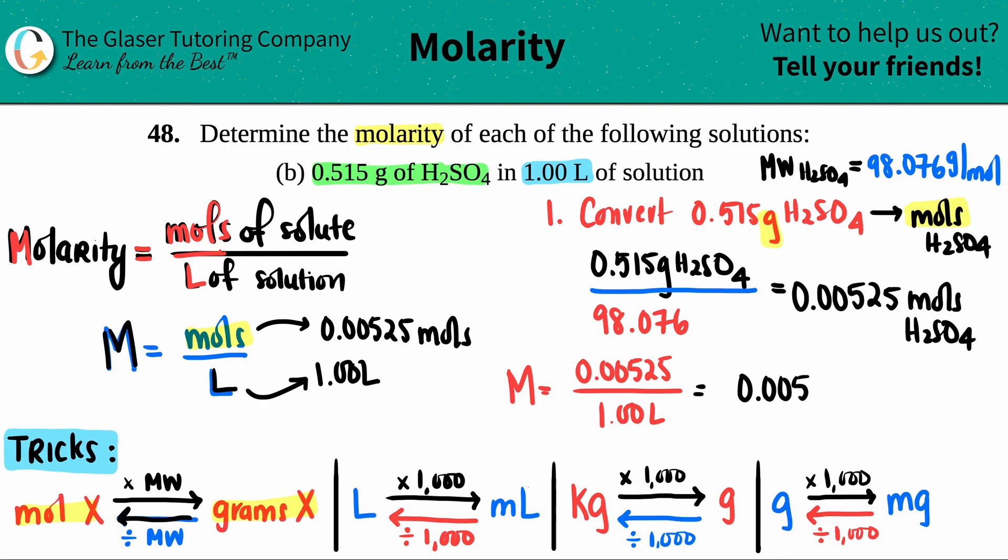Units for molarity: you could write it as capital M (which stands for molarity), or since these units don't cancel out—I can't cancel moles with liters—you leave it as moles over liter. Both units are acceptable, and that's your answer.